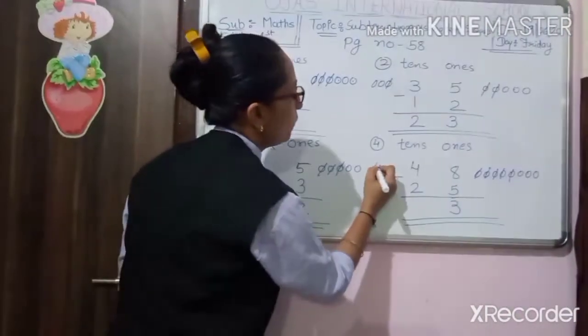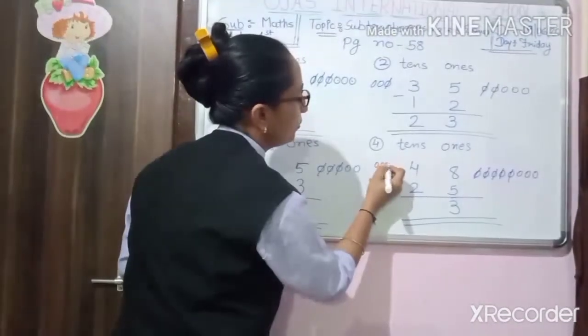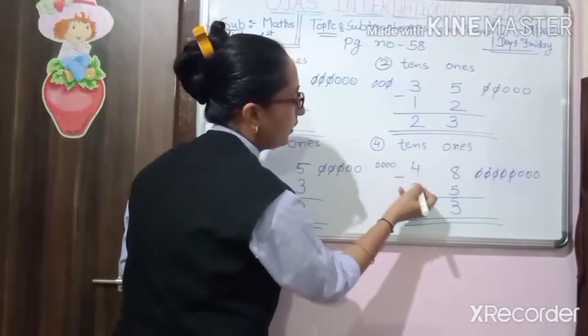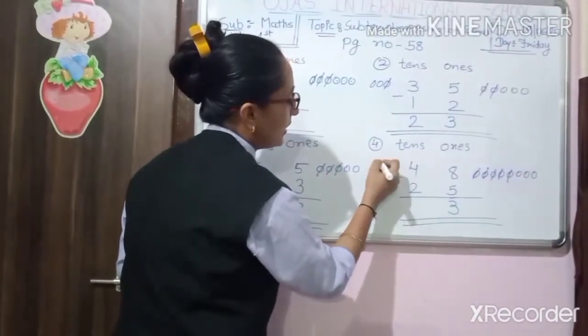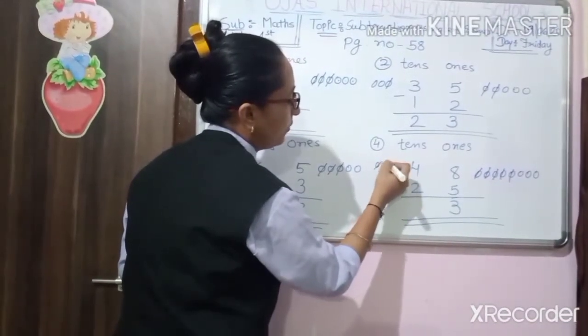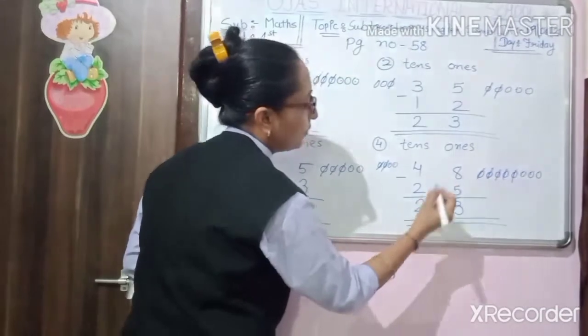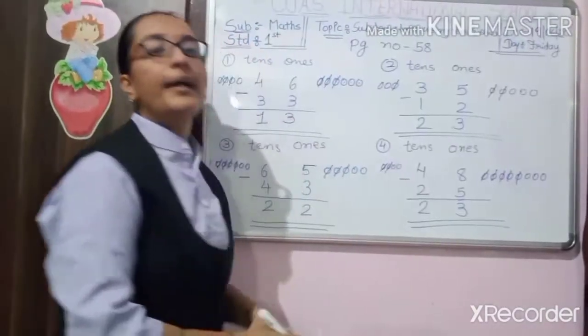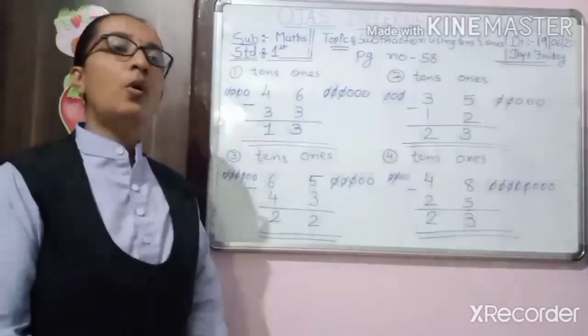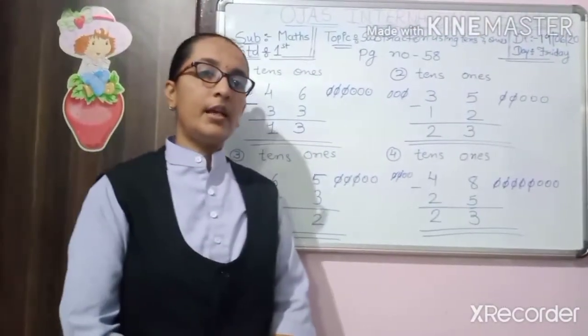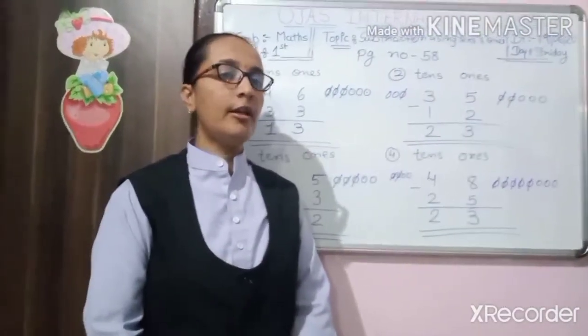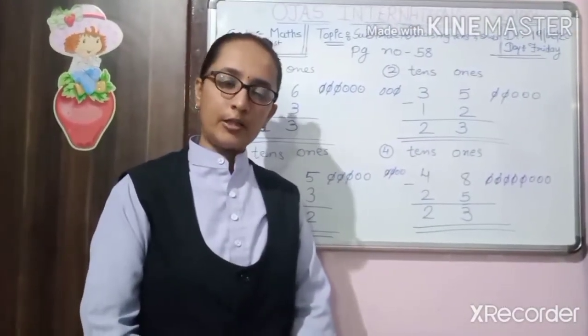Here 1, 2, 3, 4. Here 2 is there. So we cut out 2. So I hope you all understand addition and subtraction using tens and ones.